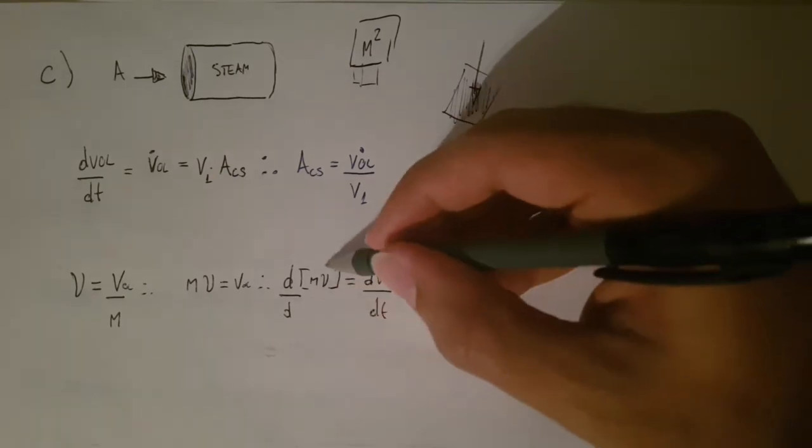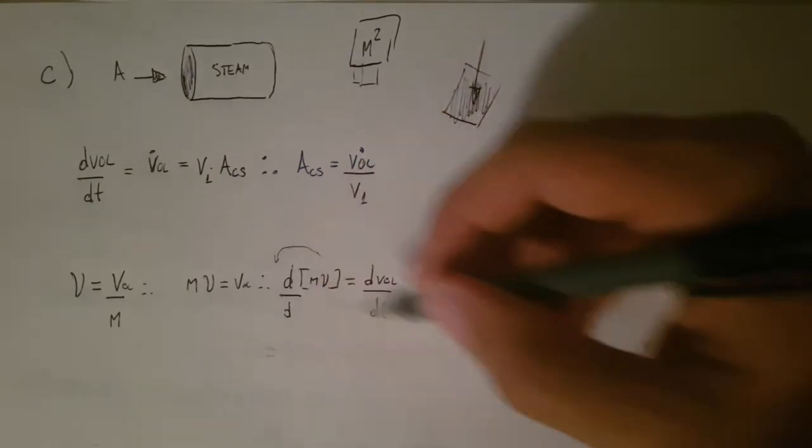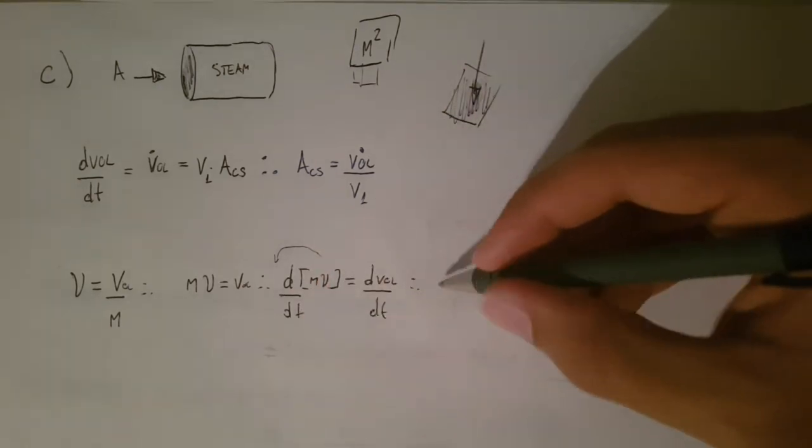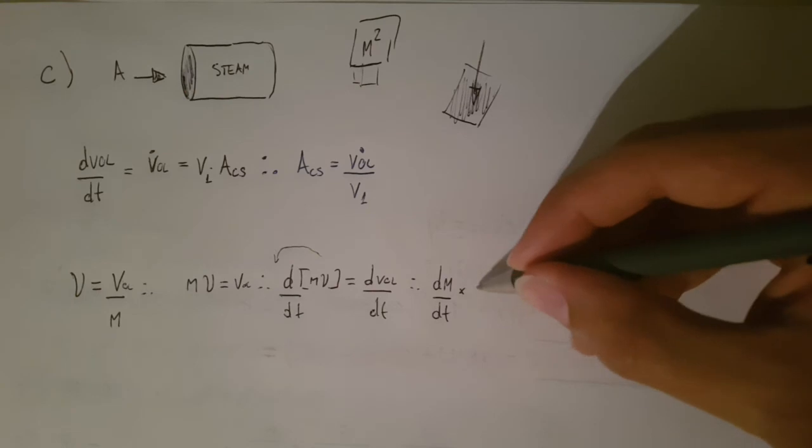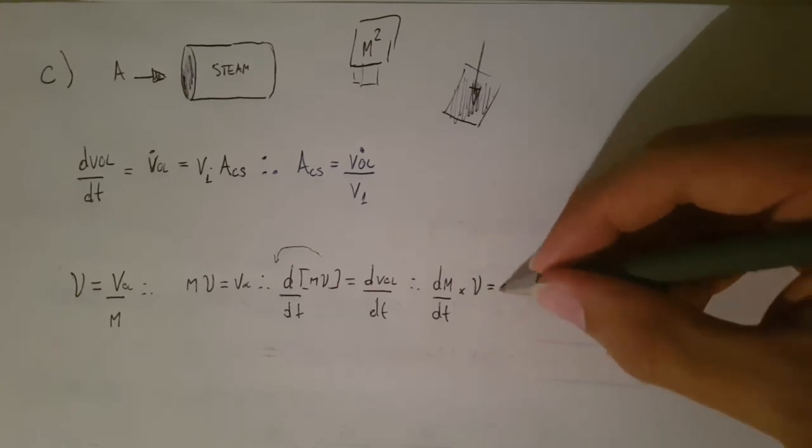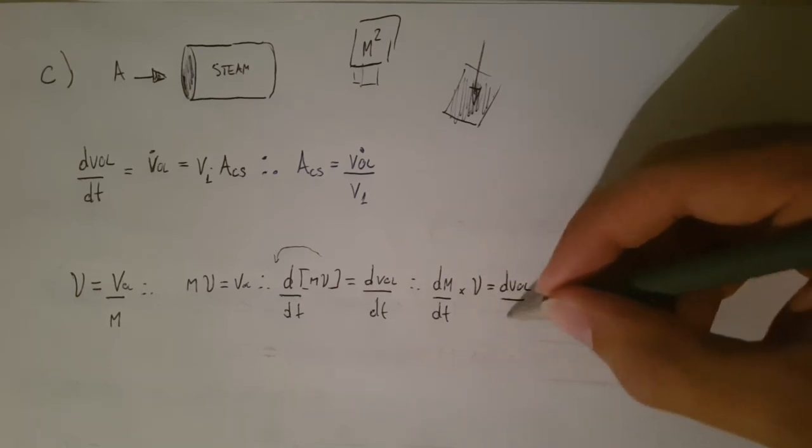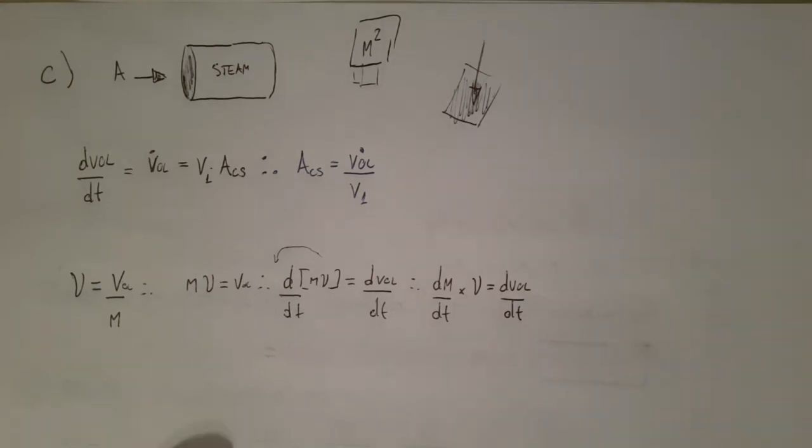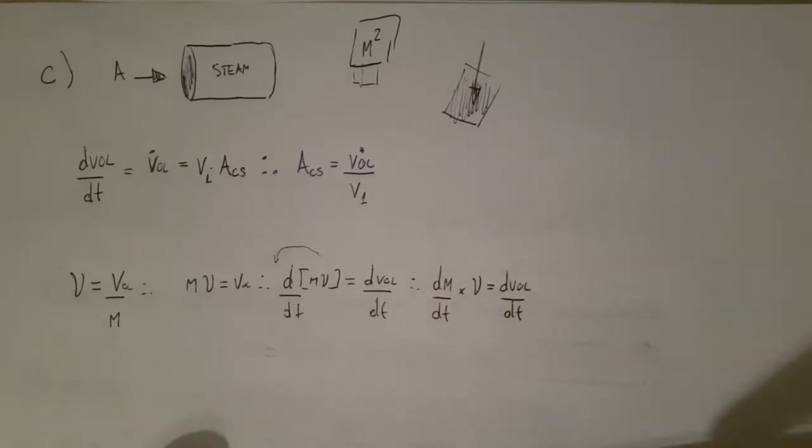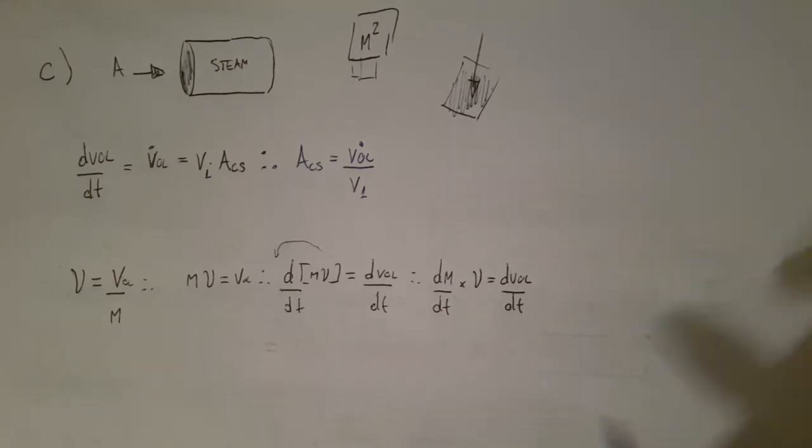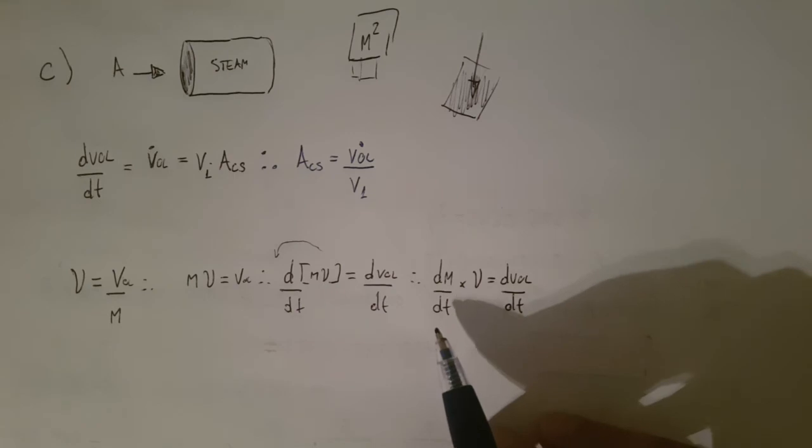This guy does not change with time. So, it leaves to derivative. And we left that mass flow rate times specific volume equals the volume flow rate. And then, if we can find the volume flow rate, we can plug that guy in there. And then, divide it by the velocity and get the area, which is what we're looking for. Okay? So, what do I need? Mass flow rate that I have. That's 12 kilograms per second.